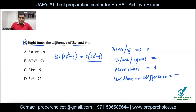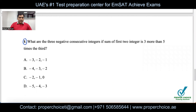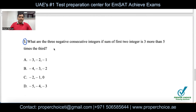Question number five: what are the three negative consecutive integers if the sum of the first two integers is three more than five times the third? This seems complicated but is very commonly asked in the MSAT.